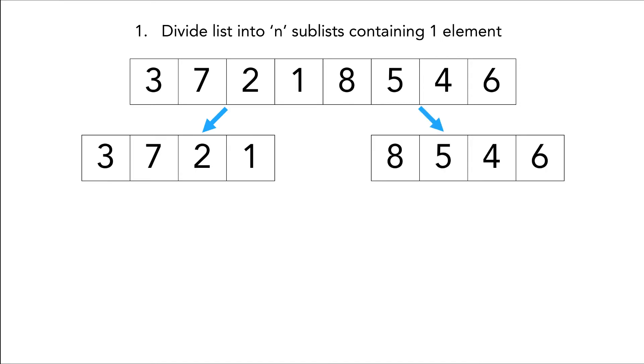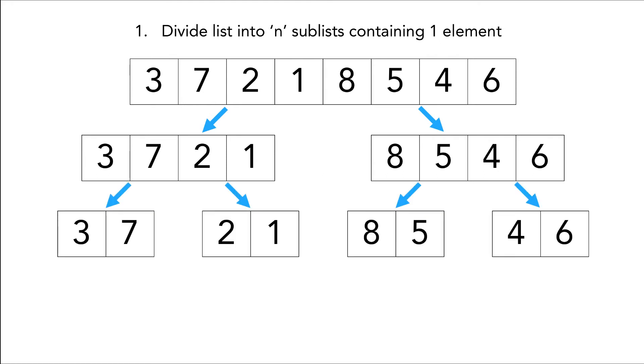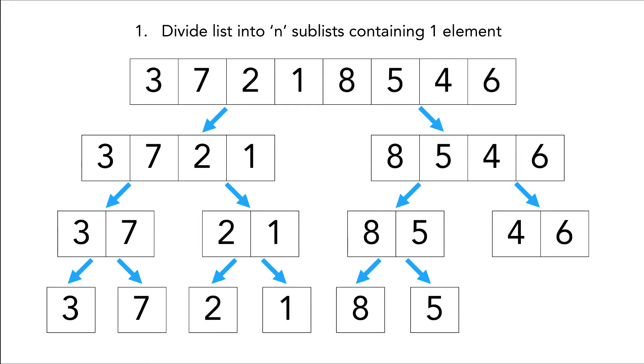Then we're gonna take the two newly created arrays and split them in half again. Three seven two one, eight five four six. Last but not least we're gonna take the arrays we just created and split them in half again until we have n sublists containing one element.